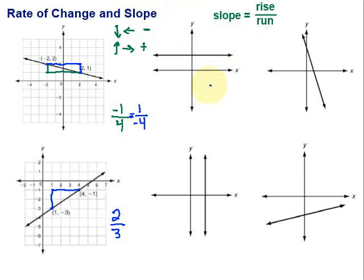So the rise would be zero over a run of, well, that could be anything. But what are we ultimately going to get? Let's say it's five. Zero divided by anything is just zero. So this is an example of a slope of zero. It has zero slope because we get that. There's zero rise and the run, well, anything divided by zero again is zero.